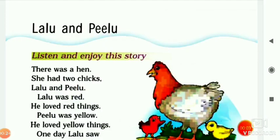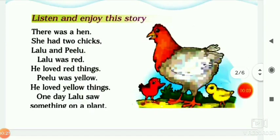There was a hen. Ek baar ek murgi thi. She had two chicks. Uske do chicks thi. One was red and another one is yellow. Lalu and Pillo. Unke naam kya thi? Lalu and Pillo.